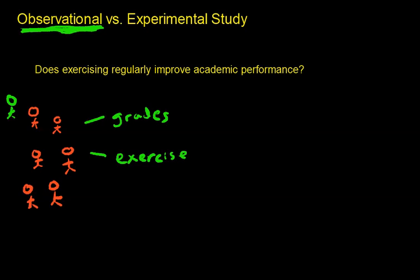So now the second scenario is if I were to do an experimental study. In an experimental study, one way that I could run an experiment, there's lots of ways you can run an experimental study to answer this question, but one way that I could do it is I could randomize my students in the beginning of the semester to exercise and not to exercise.